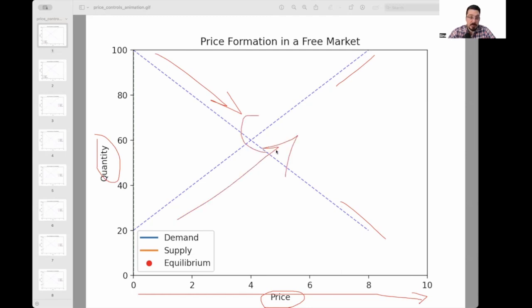At some point, supply and demand meet each other. And that's the happy place. That's where the market reaches equilibrium. So I made a quick animation to demonstrate this.